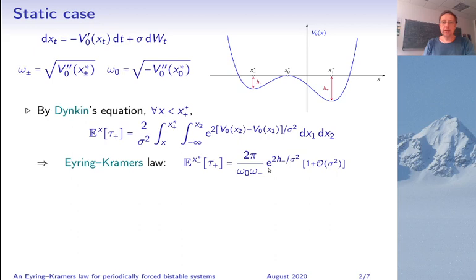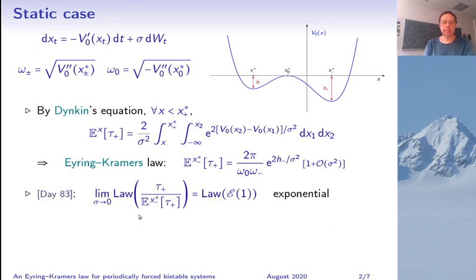It shows that the expected transition time is exponentially large in the barrier height between the starting minimum and the saddle, and there's a pre-factor depending on the curvatures introduced here. Furthermore, Day has shown that the law of τ₊ renormalized by its expectation converges to the law of an exponential variable of parameter 1 if sigma goes to zero.